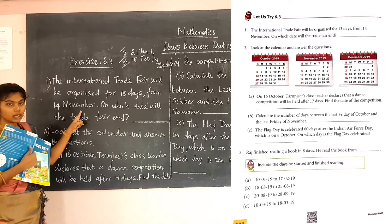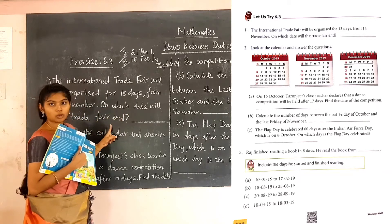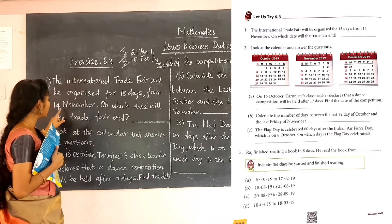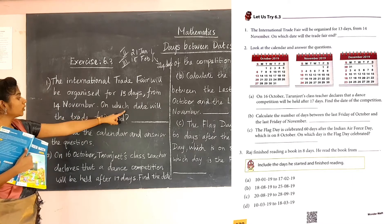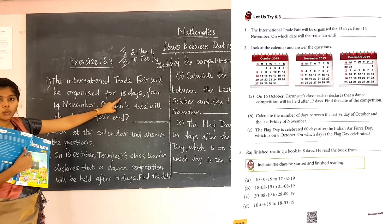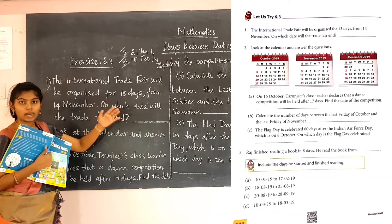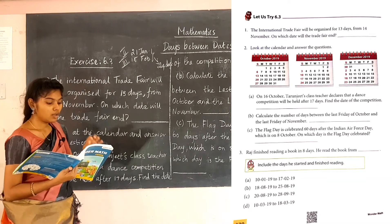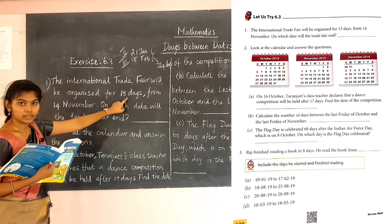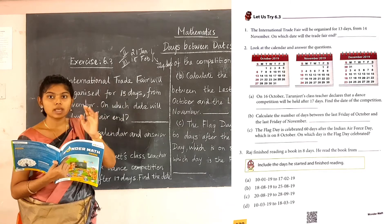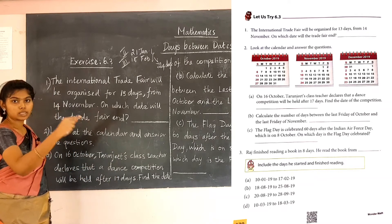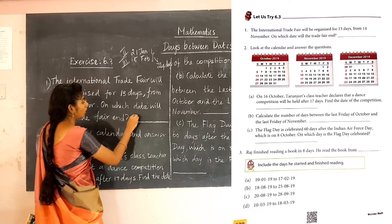The fair starts on 14 November and we need to find when it ends. The fair will be held for 13 days. See the November month in the 2019 calendar. From 14 November, you count 13 days: 14 plus 13 gives 27, but counting each date on the calendar you will get 26 November as the end date.